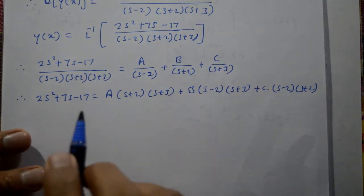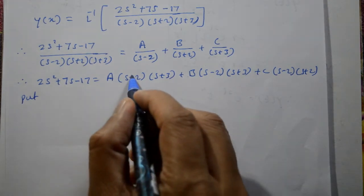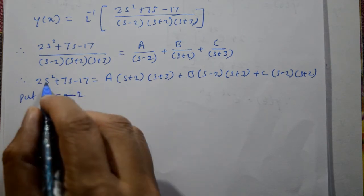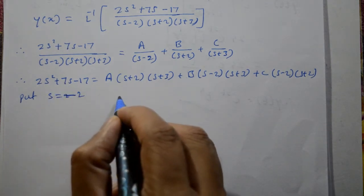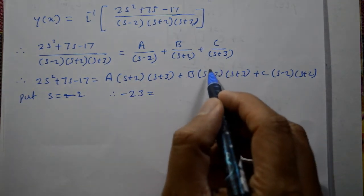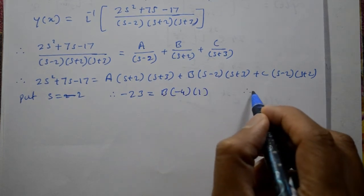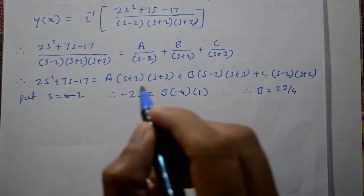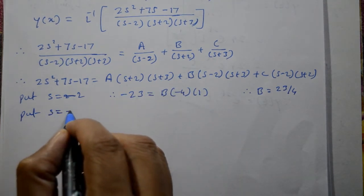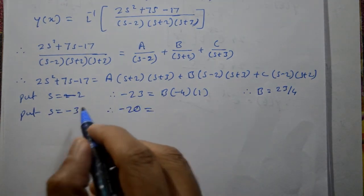We need A, B, C and then we'll apply inverse Laplace to get solution. Now put s plus 2 equal to zero or s is equal to minus 2. Applying s equals minus 2: minus 2 square gives 4, 7 into minus 2 is minus 14, minus 17 gives minus 23. Left hand side is minus 23. s equals minus 2 makes first term zero, s equals minus 2 makes this zero, gives b into minus 4 into 1. Therefore b is equal to 23 by 4.